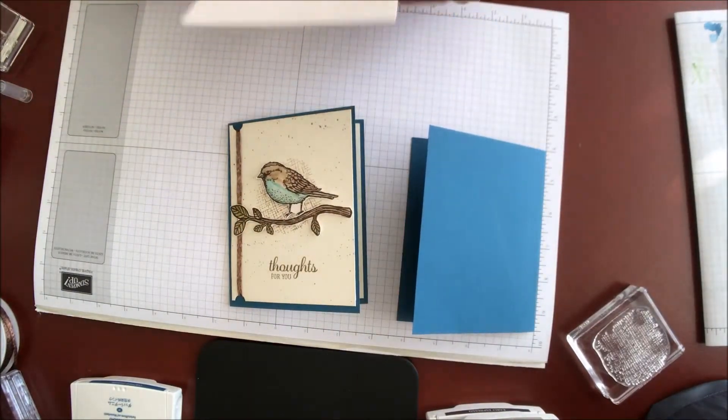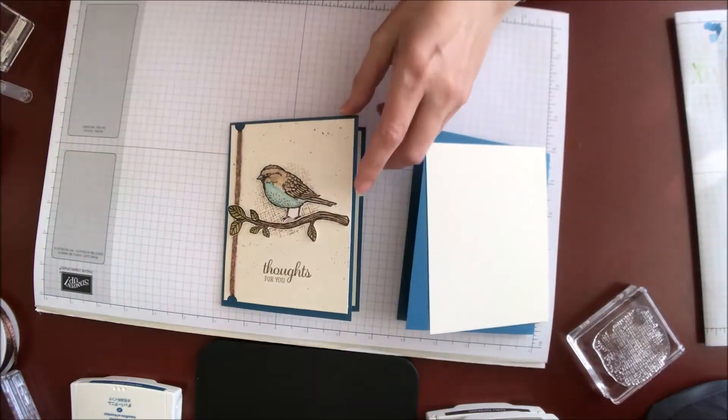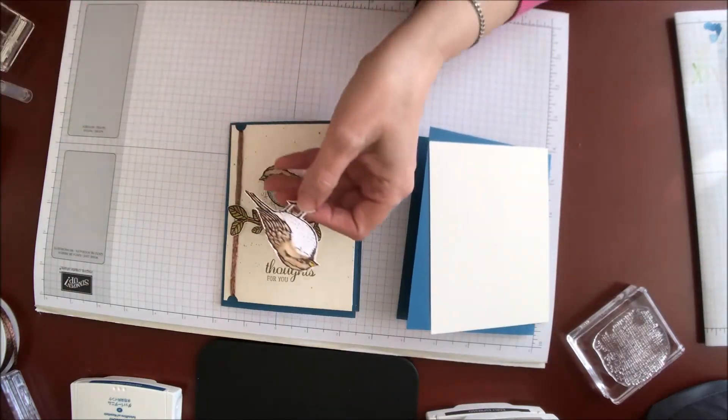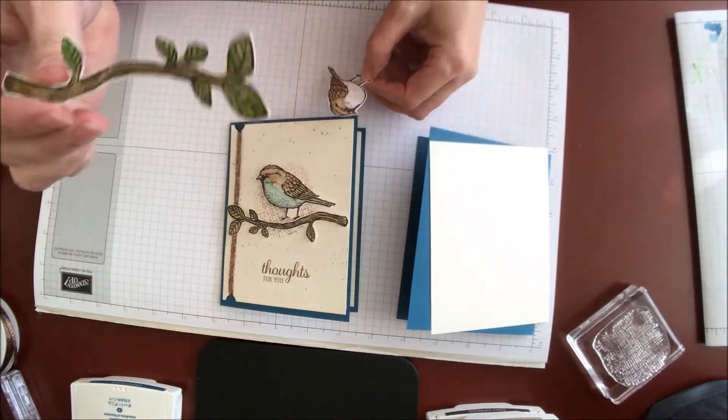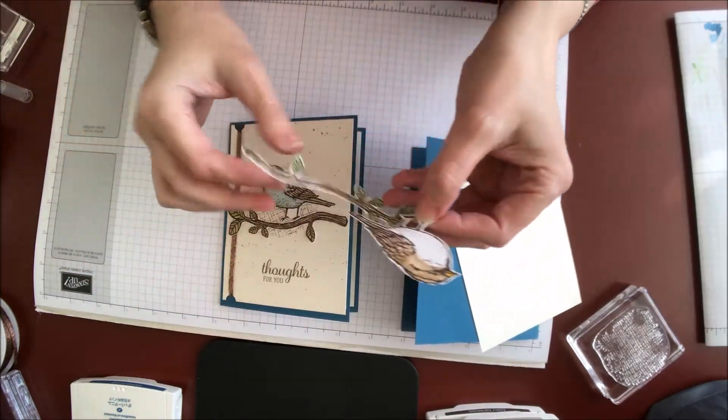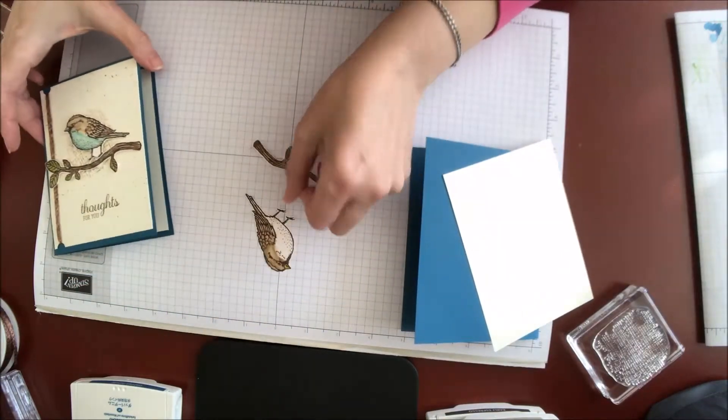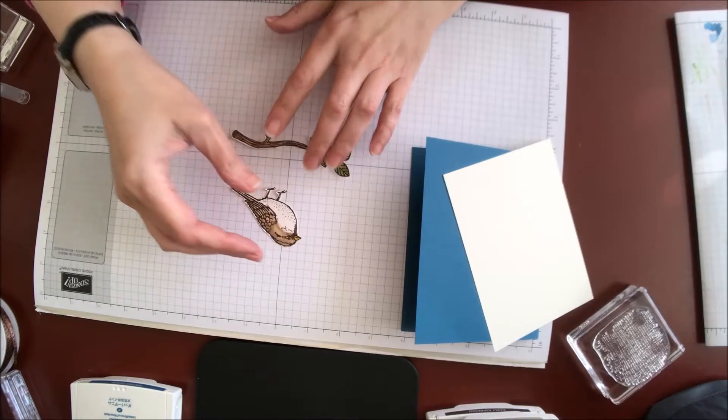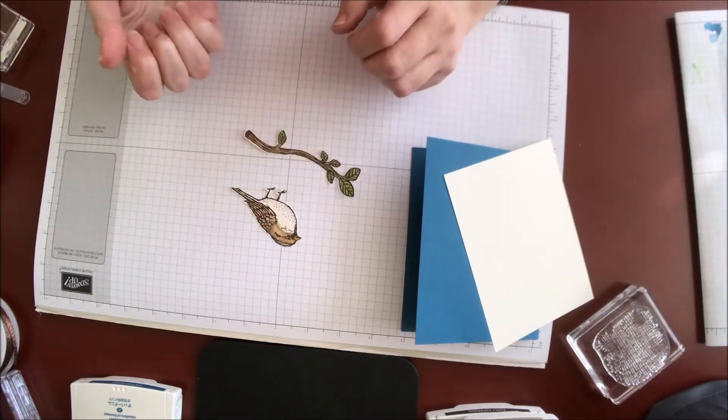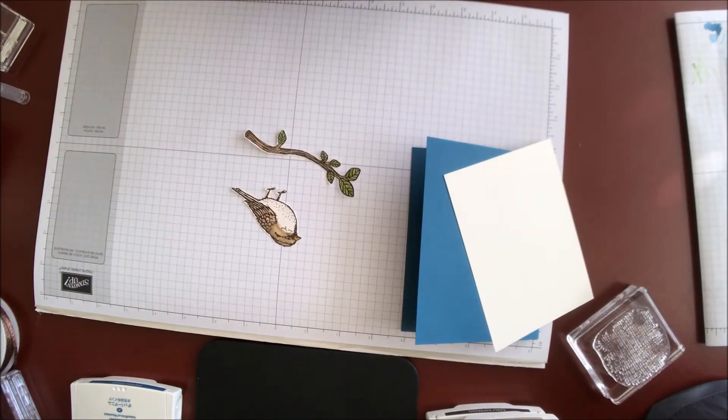And this is a piece of very vanilla. I've already stamped and started to color my images. I used the branch here and I've got my bird. Now there are framelits for this as well. When I went to look for my framelits to cut these out, I didn't have them.